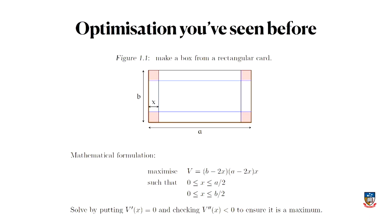You've seen this even earlier than Maths 1 — this is essentially a high school problem. You've got a piece of cardboard, you cut four squares out of the corners, fold it up, and try to make a box with the highest possible volume. That's a calculus problem similar to the last one, except it has a continuous variable x rather than discrete variables, and it's cubic — the function you're maximizing has an x cubed in it because it's a volume problem.